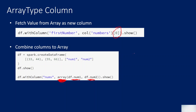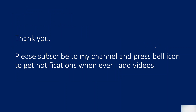So in this video I hope you got what an array type column is. Array type columns contain values like an array — you can compare it to a list in Python. Each value has an index: zeroth index, first index, second index. You can access these values using those indexes. Thank you for watching. Please subscribe to my channel and press the bell icon to get notifications whenever I add videos. Thank you so much.